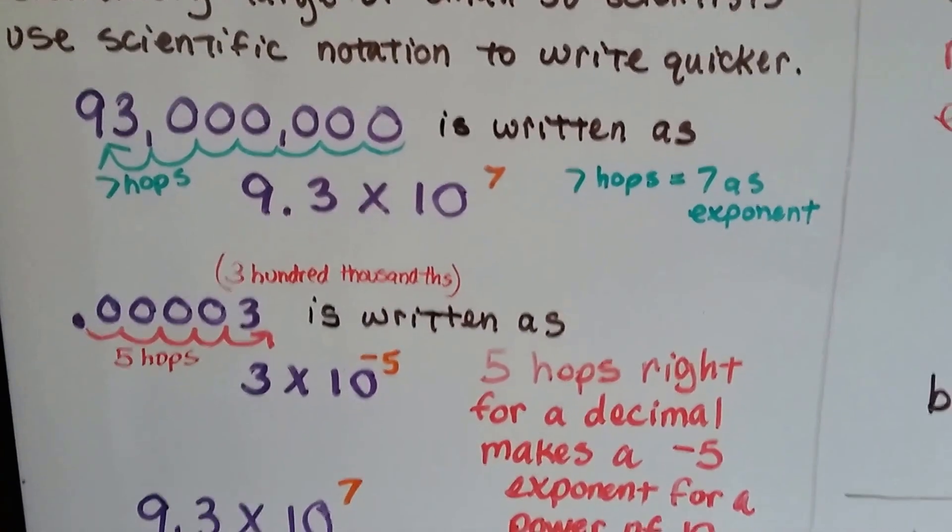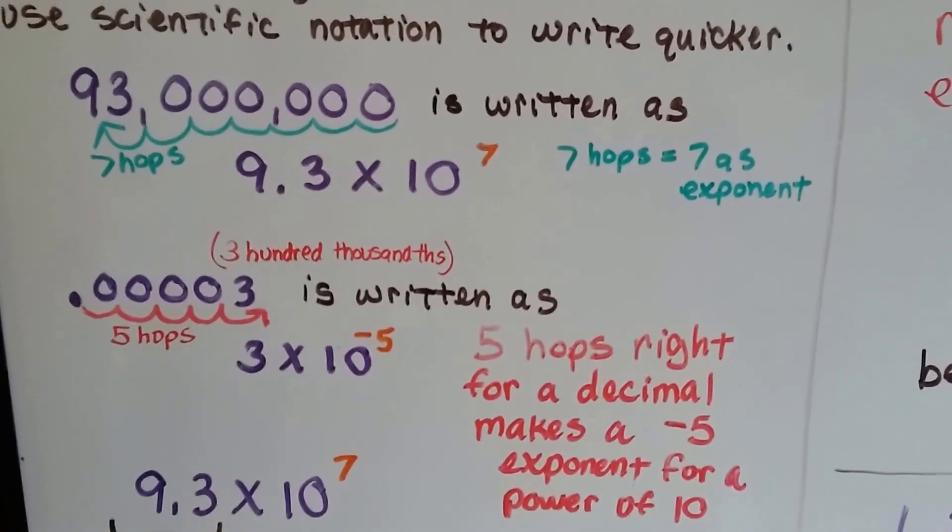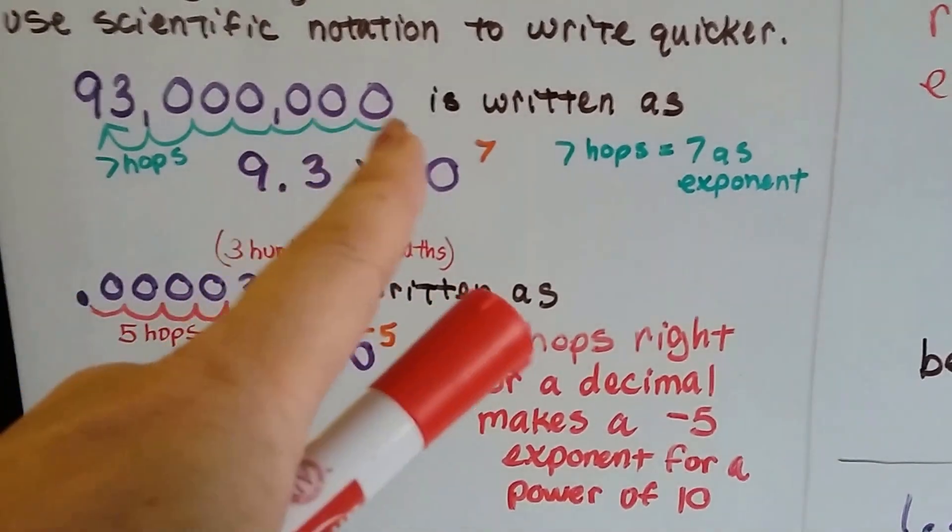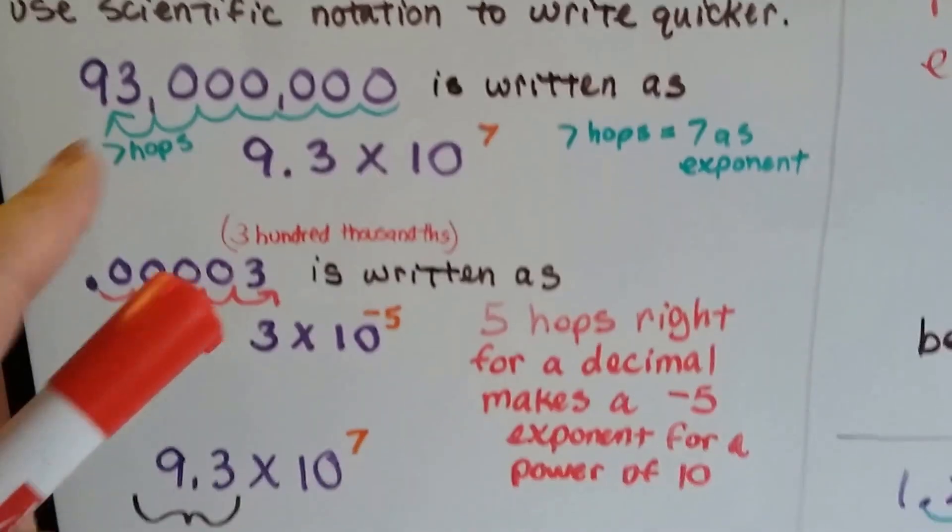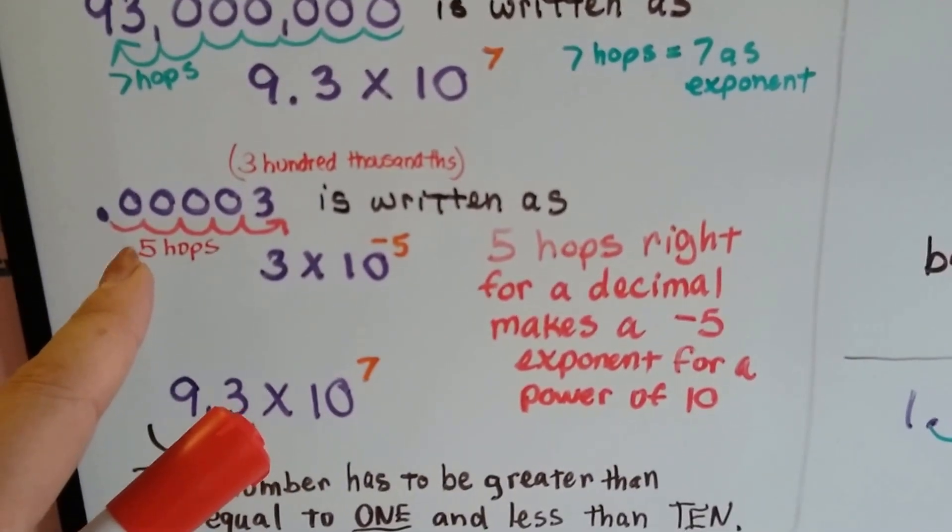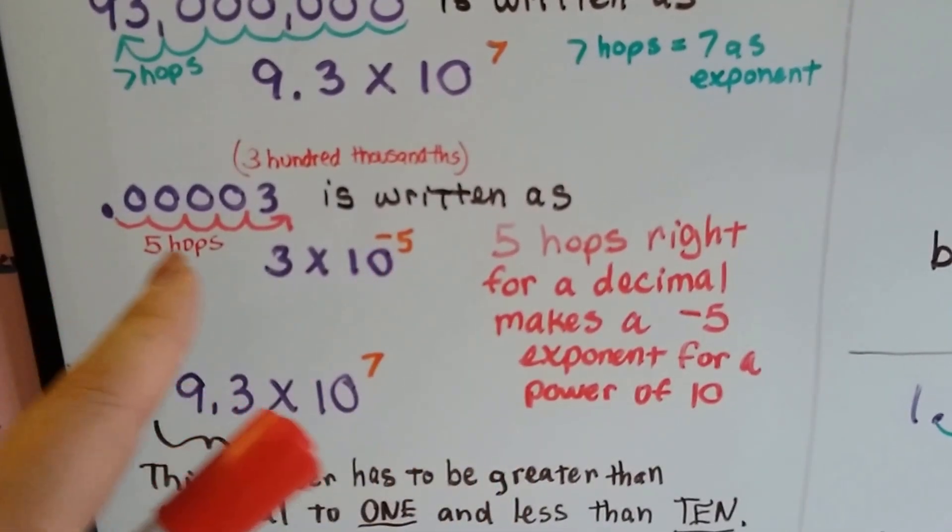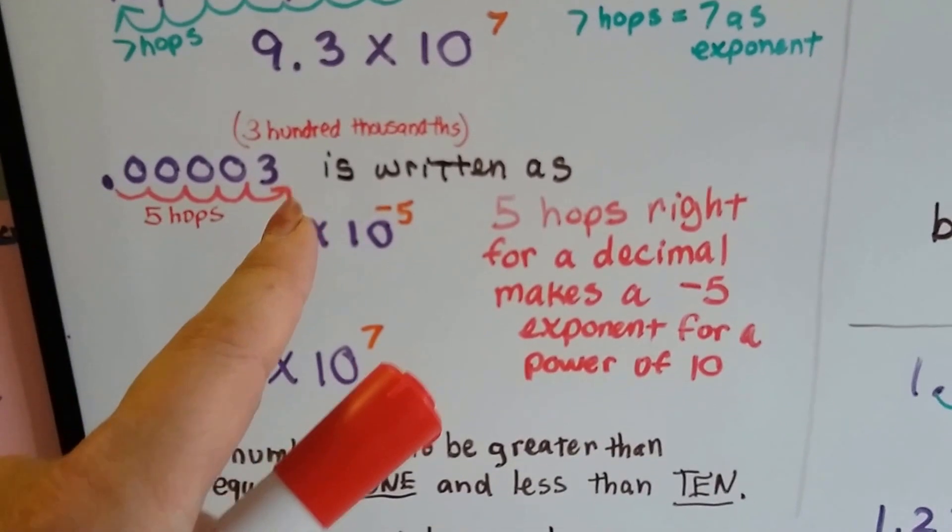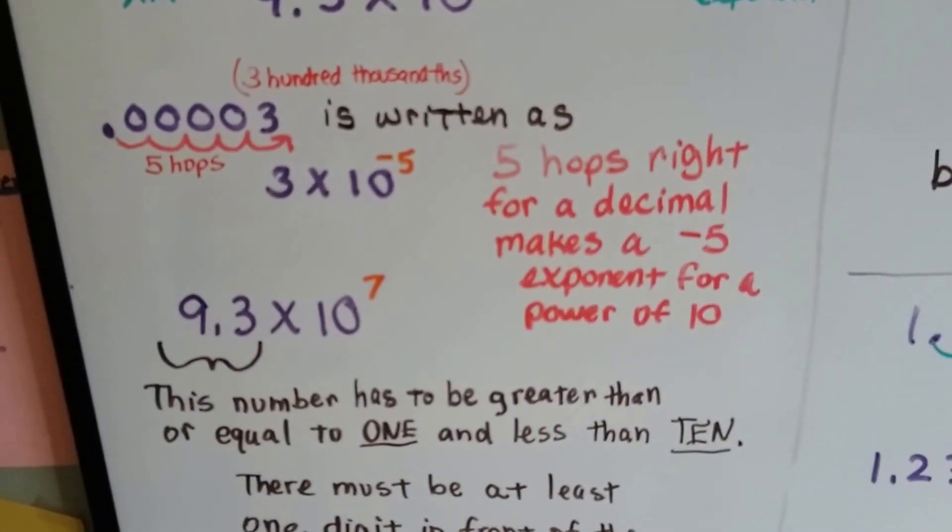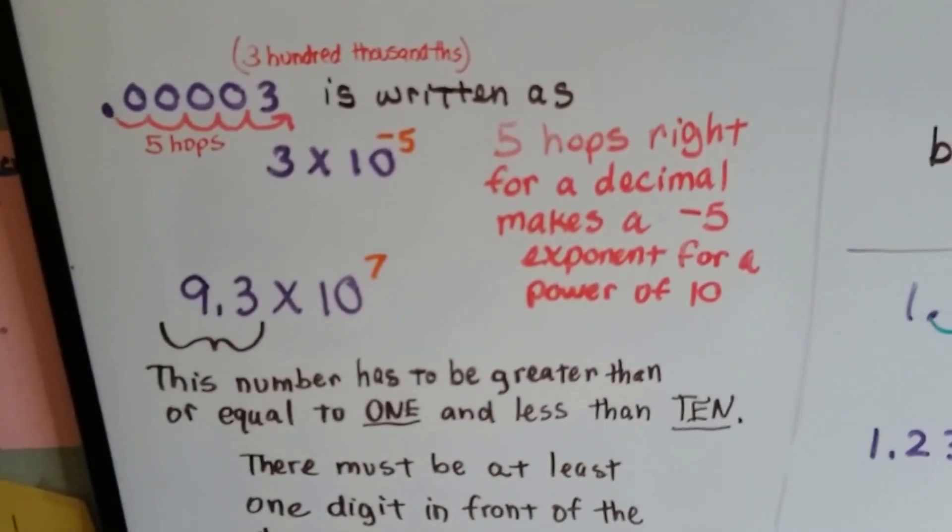We learned that 93 million can be written as 9.3 times 10 to the 7th because we moved the decimal point 7 hops over. And we learned that 300 thousandths can be written as 3 times 10 to the negative 5 because it's moving 5 hops to the right. 5 hops to the right for a decimal makes a negative 5 exponent for the power of 10.